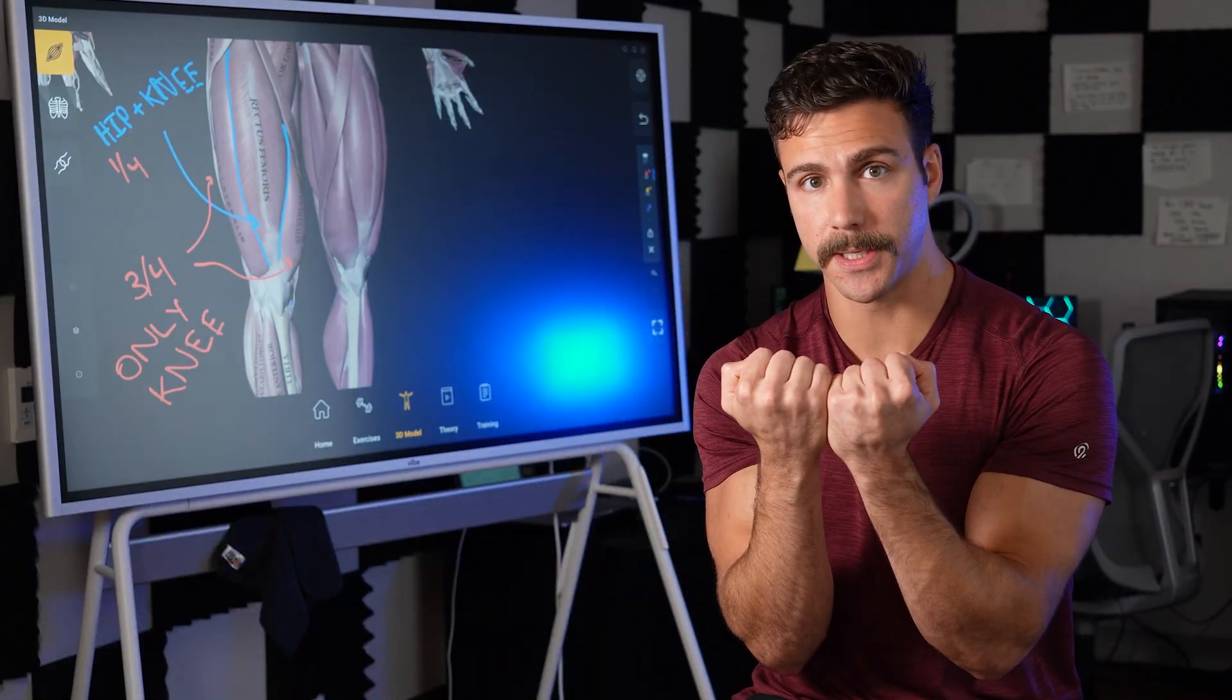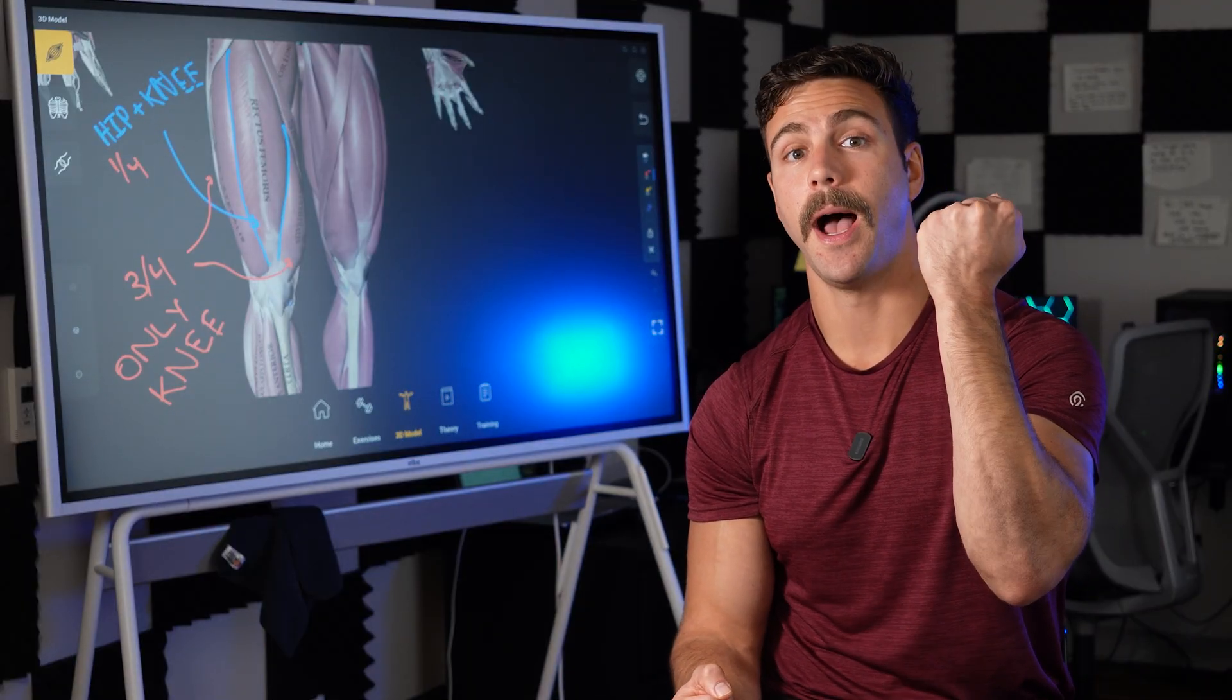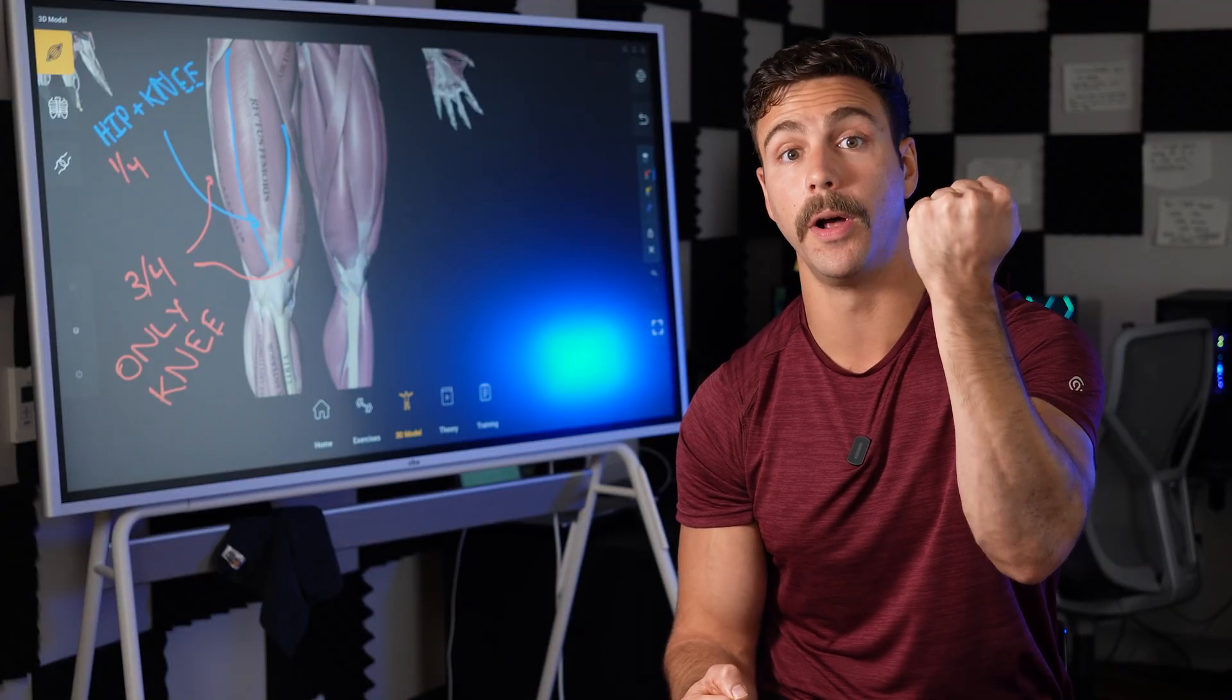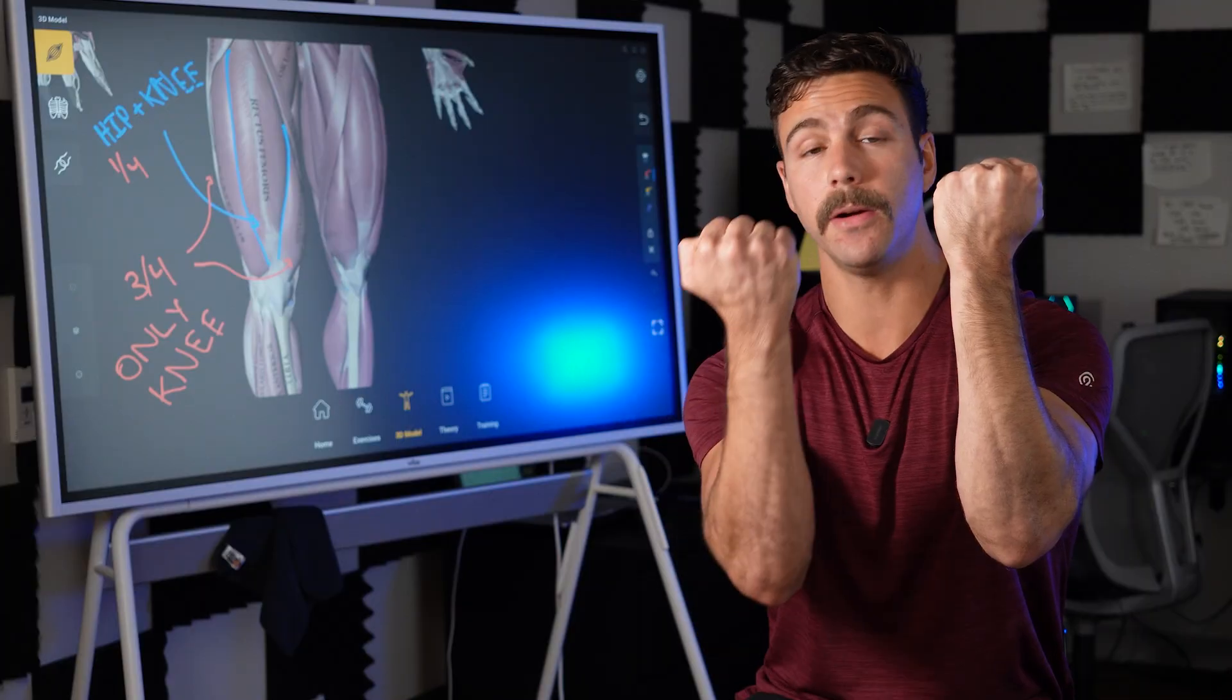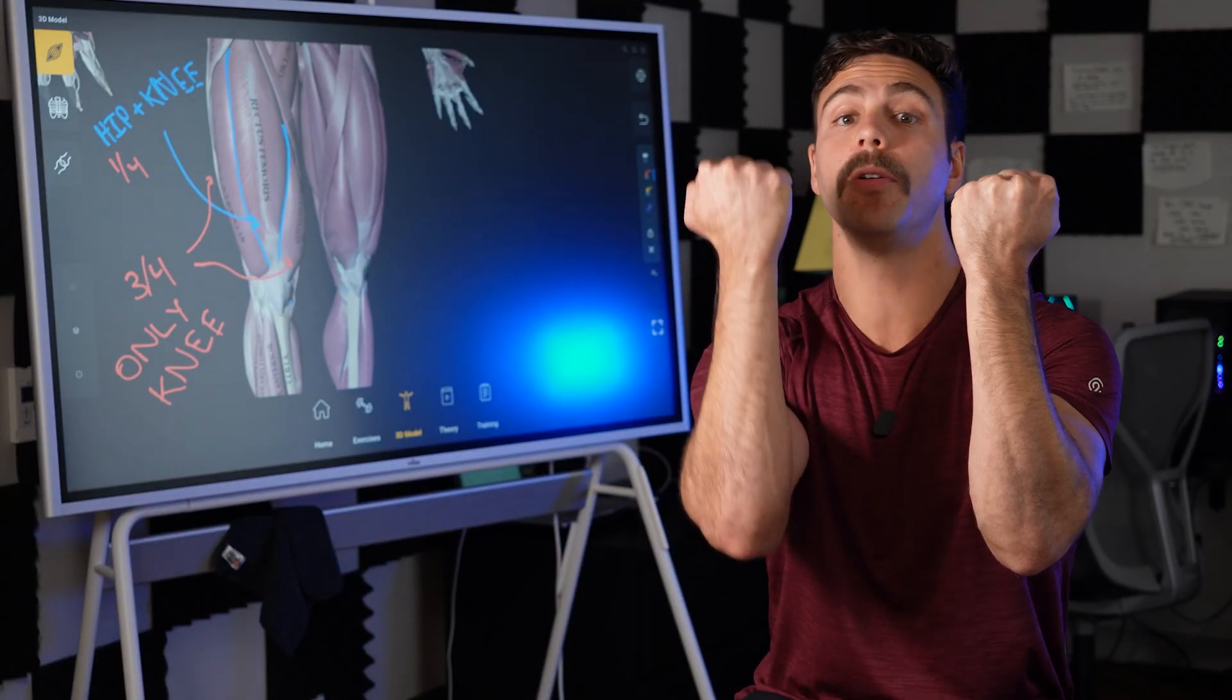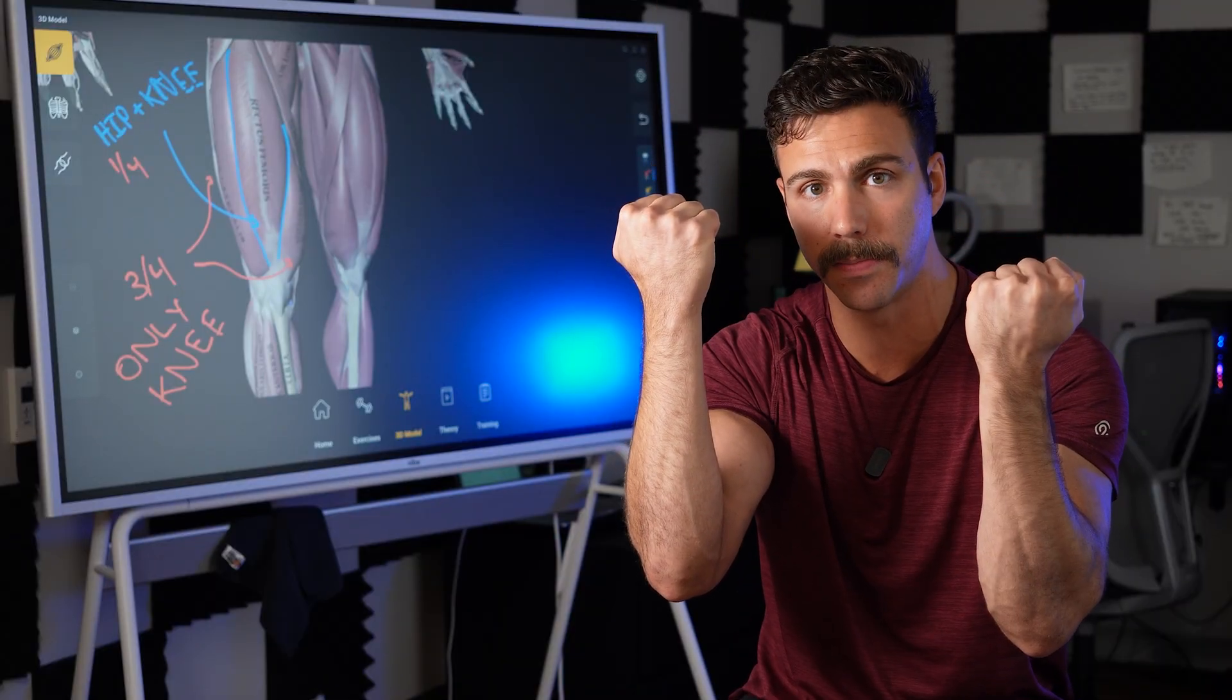So when we tie these two concepts together, slow contraction velocities, which means high degrees of mechanical tension, the driver for muscle growth on a single muscle fiber, paired with high degrees of motor unit recruitment, which makes sure all the muscle fibers are turned on and experiencing this slow contraction speed.